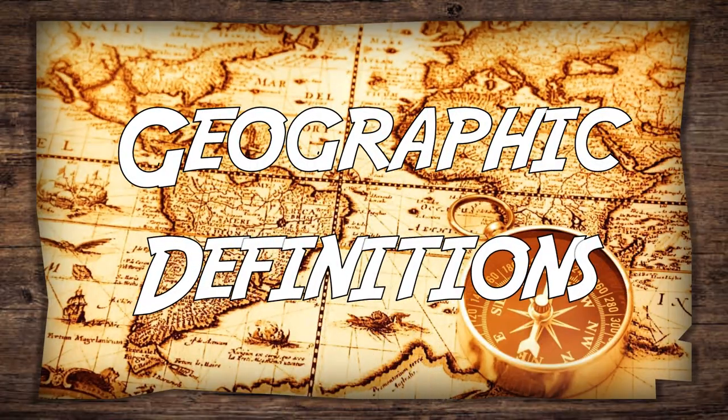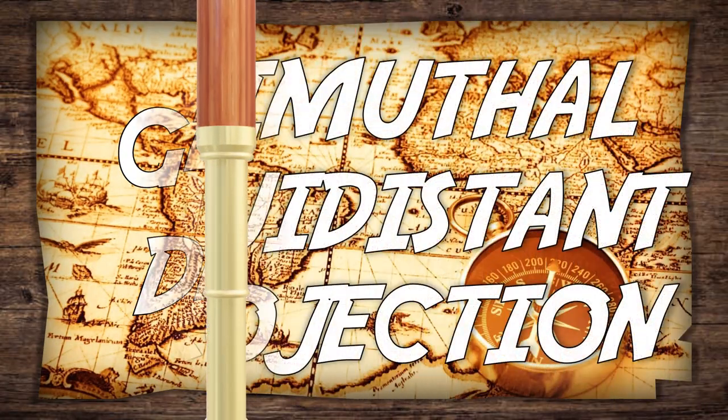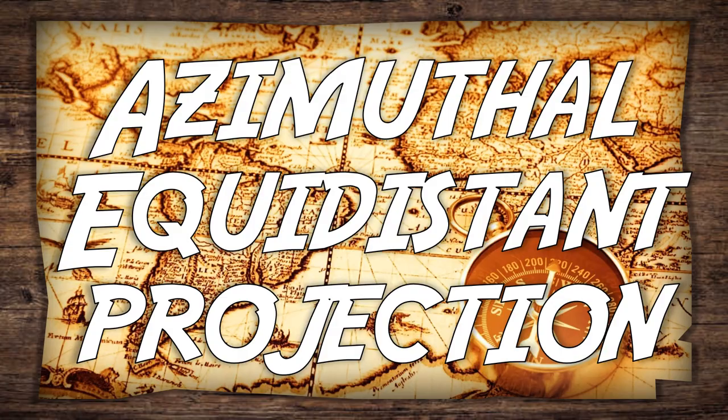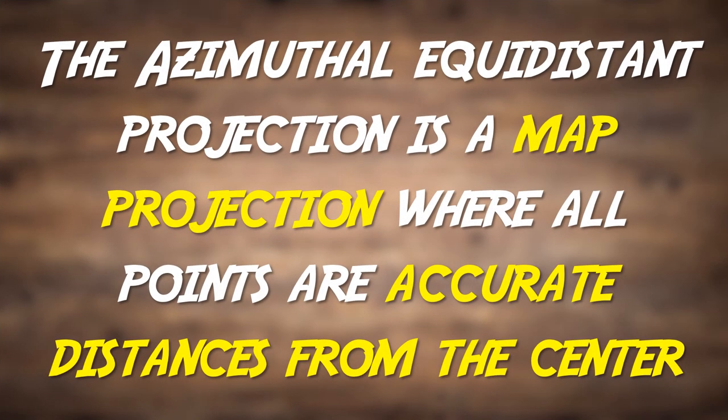Welcome to Geographic Definitions. Today we'll be defining azimuthal equidistant projection. The azimuthal equidistant projection is a map projection where all points are accurate distances from the center.